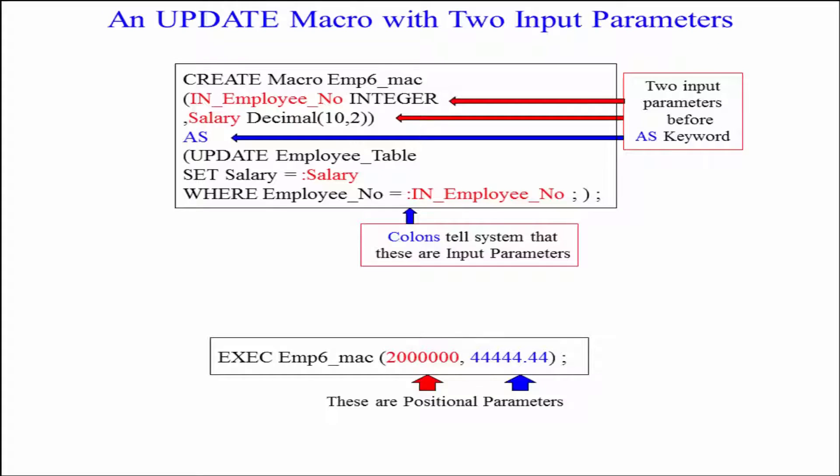Here I create the macro, macro name, open paren. I call it IN_Employee_No and the next variable I call Salary, close everything up then say AS. And as you can see here I'm going to update the employee table